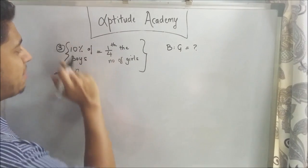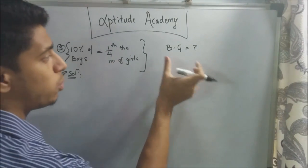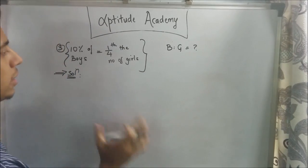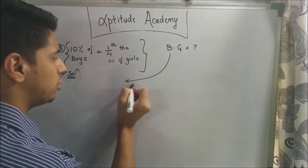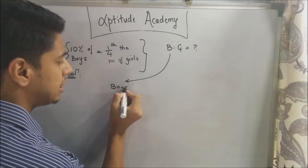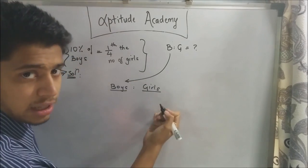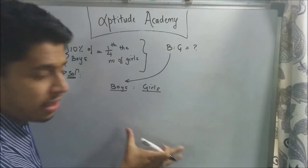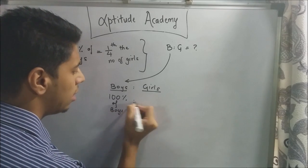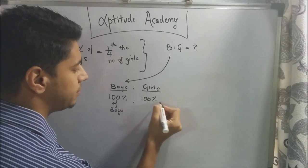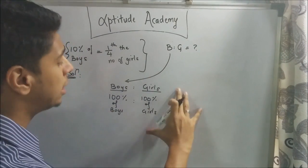In problem 3, 10% of the boys equals one-fourth of the girls. To find the ratio of boys to girls, you need to count all the boys and all the girls. You want 100% of boys to 100% of girls. That's how you form the correct ratio.